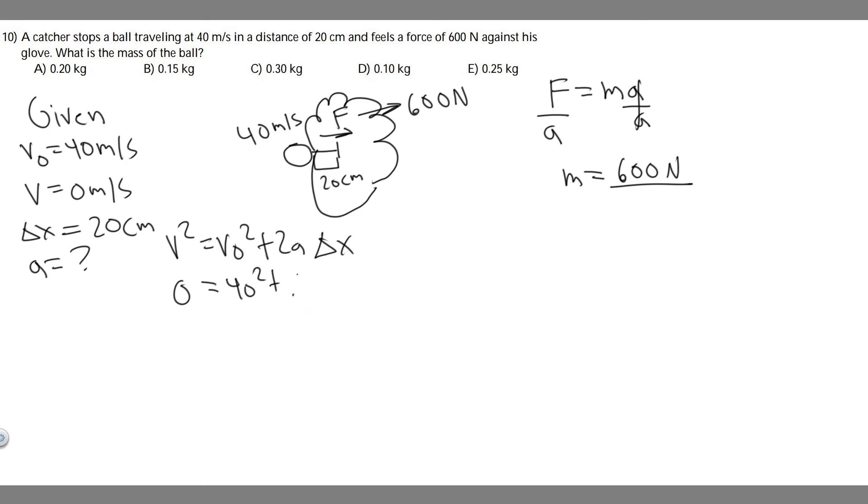So this is 0 equals 1600 plus 0.4a. We can subtract 40 squared from both sides, then we get minus 40 squared equals 0.4a, divided by 0.4. If you do 40 squared and divide by 0.4, you're going to get a equals minus 4000.